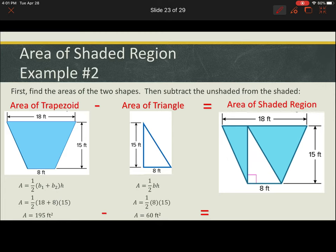Now the area of the shaded region, again we take the area of the trapezoid, subtract the area of the triangle, and we get the area of the shaded region to be 135 feet squared.